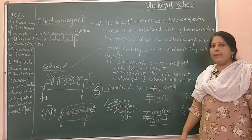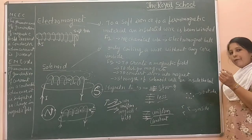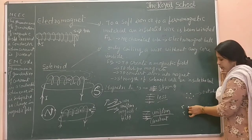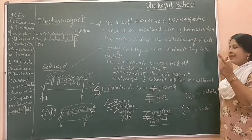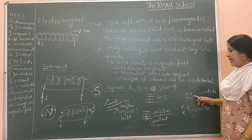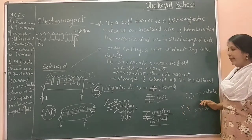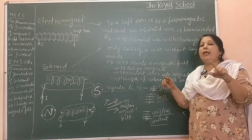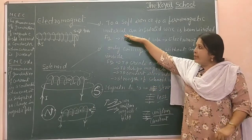Another important thing: if you see the sign of dots, that means the current is passing outside the coil. If you see an arrow mark sign, then the current is passing inside the coil. These are the signs through which you can understand in which direction electricity is being passed and where the strength of the magnetic field is.